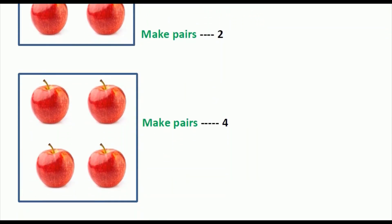In the next picture, do these apples make a pair? Yes, in this picture the apples are making a pair. Here we can see two apples, and here also we can see two apples. So altogether we have four apples and all these four apples make a pair. The numbers which make pairs are called even numbers.